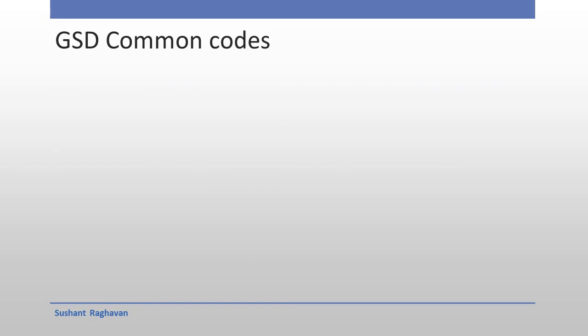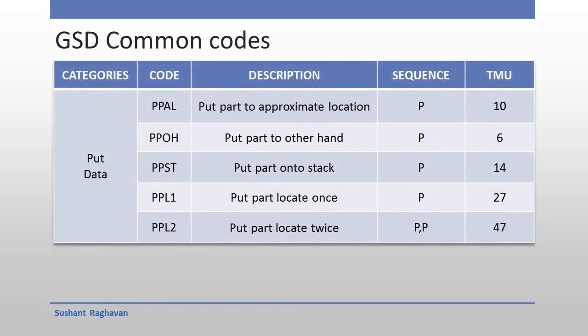GHD Common Codes — Put Data category: PPAL — Put part to approximate location; PPOH — Put part to other hand; PPST — Put part onto stack; PPL1 — Put part locate once; PPL2 — Put part locate twice.